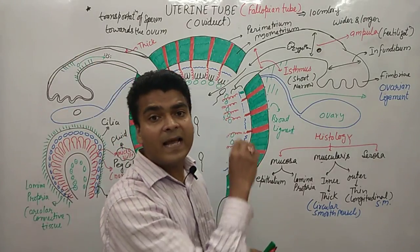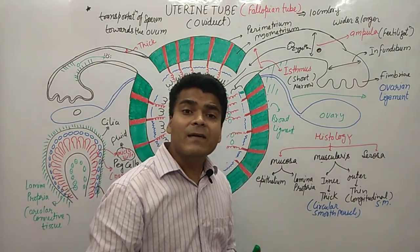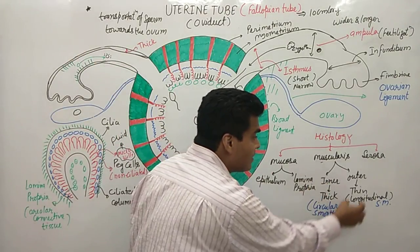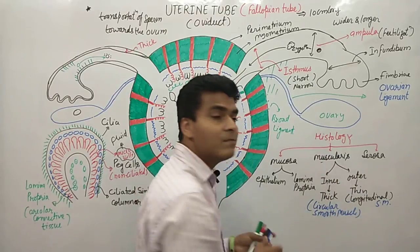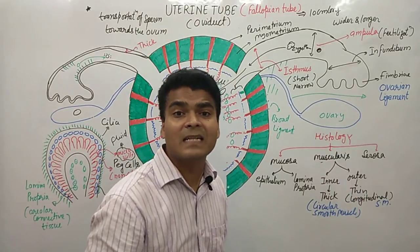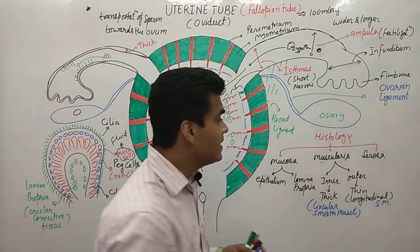The muscularis layer performs peristalsis movement. The circular and longitudinal smooth muscles together generate this peristalsis movement.